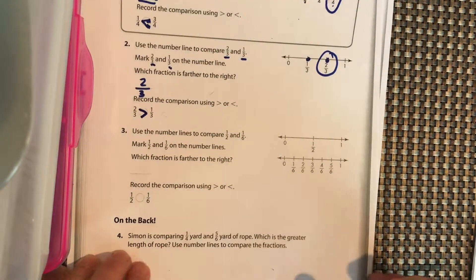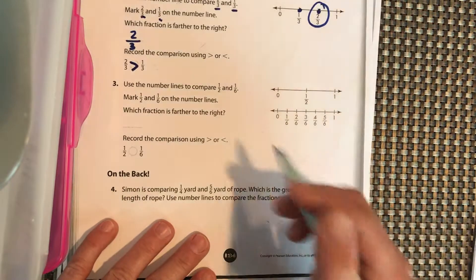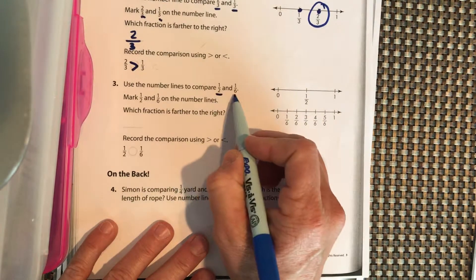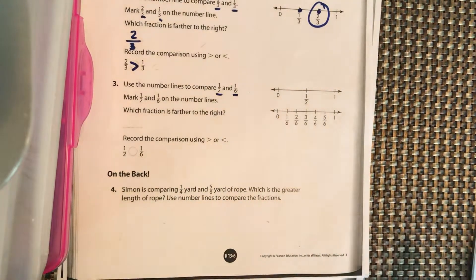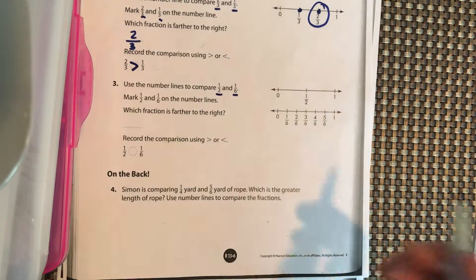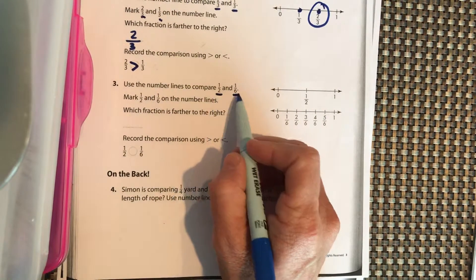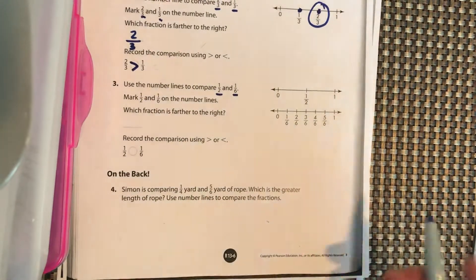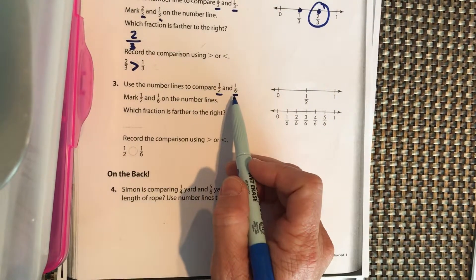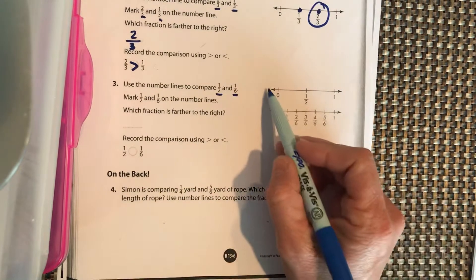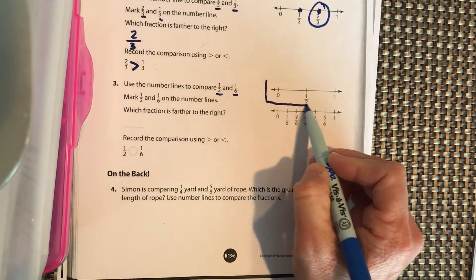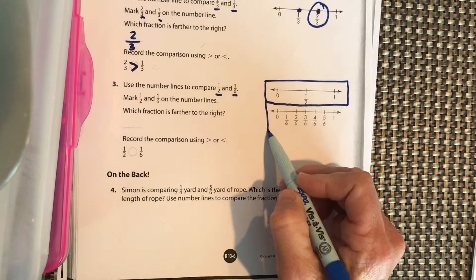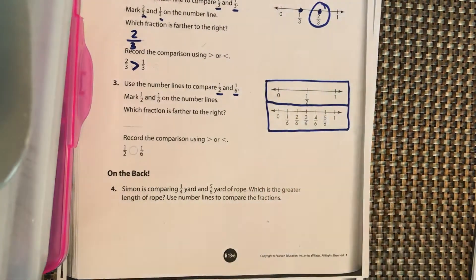Let's use the number lines to compare 1/2 and 1/6. We have different denominators, you can cancel the party, because now we have to stop and think. If we're using number lines we need to make two separate number lines. We are not going to compare 1/2 and 1/6 on the same number line. So here is one number line and here is a separate number line.